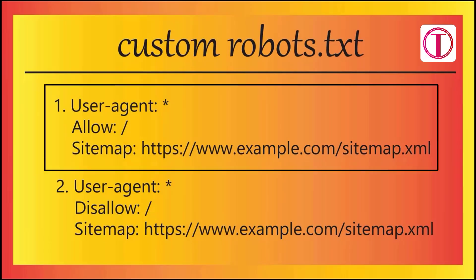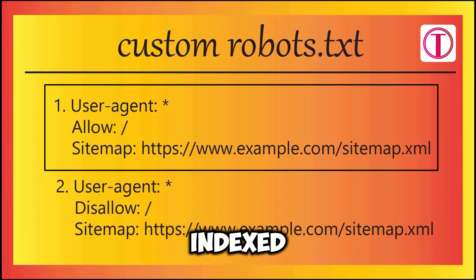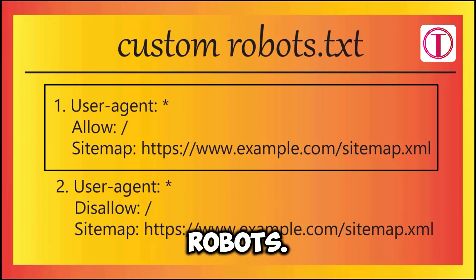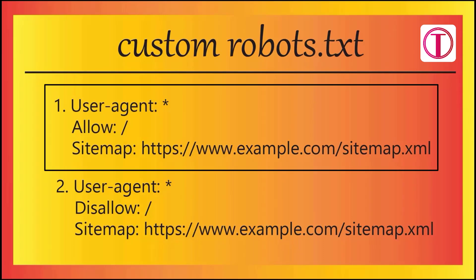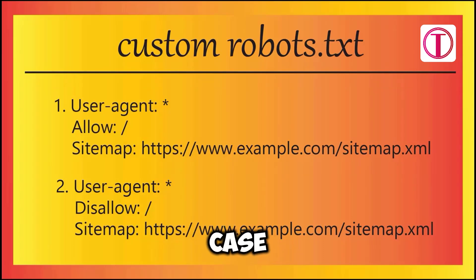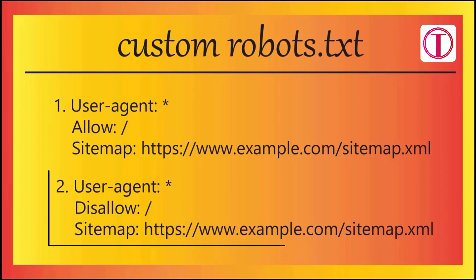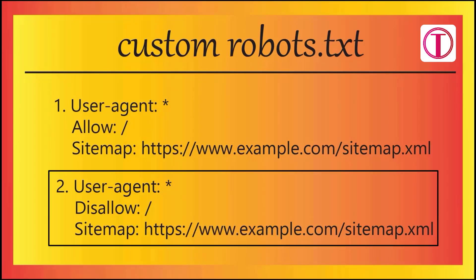In example one, 'User-agent: *' means you are calling all search engine bots to your website. 'Allow: /' means you have allowed your website to be indexed. Sitemaps must be provided in all custom robots.txt files — replace example.com with your domain name. In this case, all search engine bots can index your website.